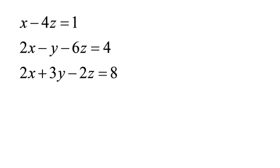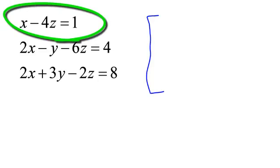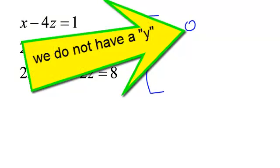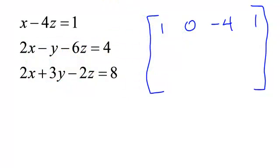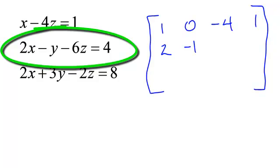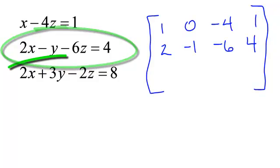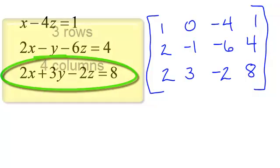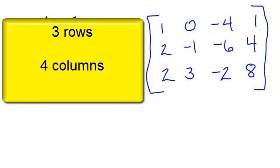Let's make our calculator really work for us now — this is when I'm very happy I know about matrices. In this problem, are my x's, y's, and z's lined up? You do have to be a little careful — there is no y in the first equation, so I write 1, 0. Zero times y is just 0. Then negative 4, and 1 is my constant. The second equation: 2, negative 1, negative 6, 4. And the last equation: 2, 3, negative 2, and 8. The dimensions of this matrix are 3 by 4.